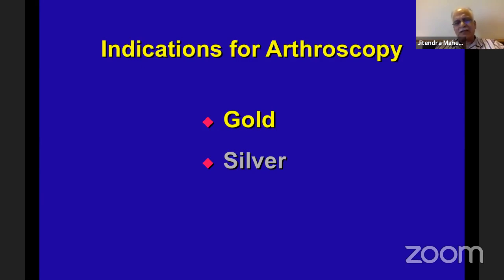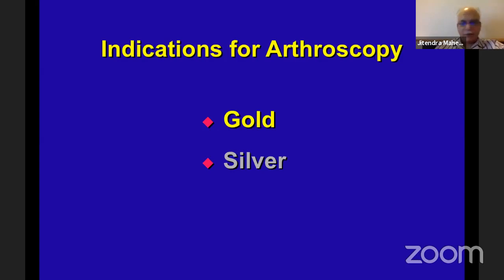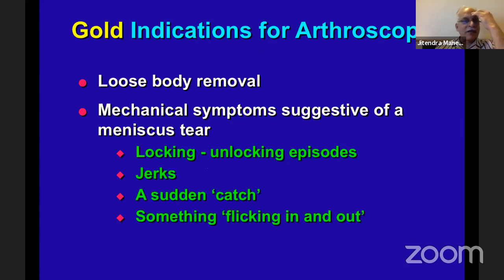Interpret particularly in relation to the patient's symptoms whether what you're seeing is actually the reason for the patient's problem. Coming to indications, I categorize them as gold and silver. Gold is where I will almost catch the patient and take them to the OT because I know those are cases that will give good results. Silver is where you're doubtful, so you take your time.